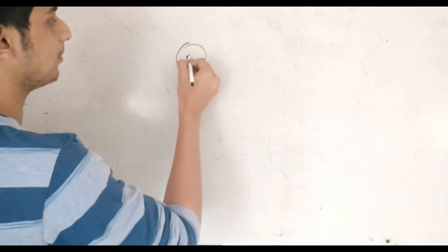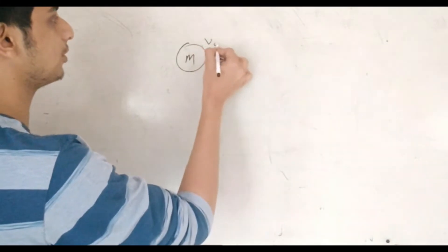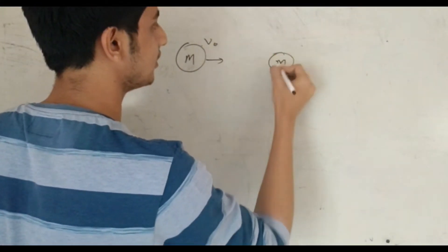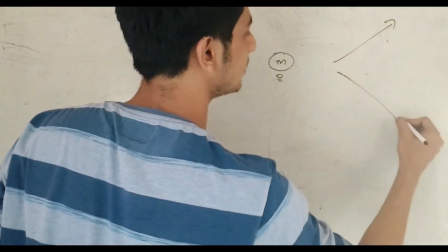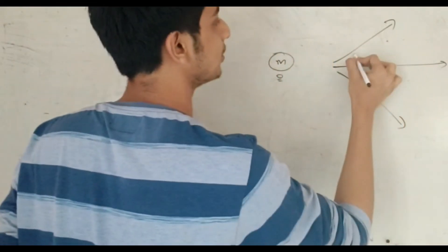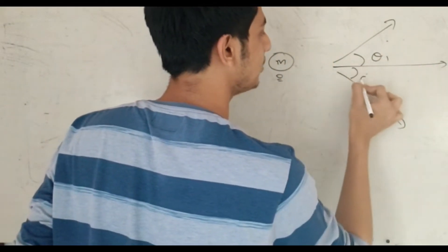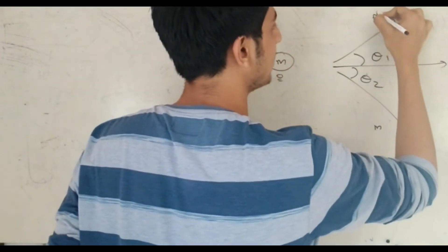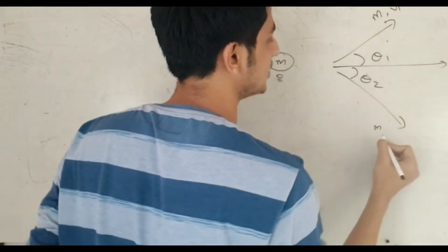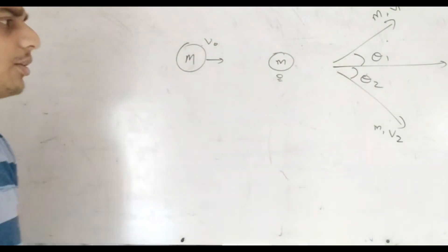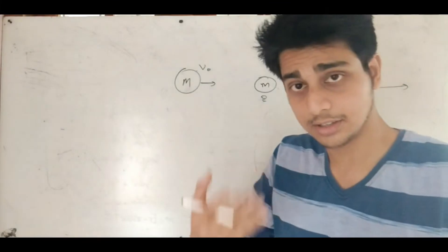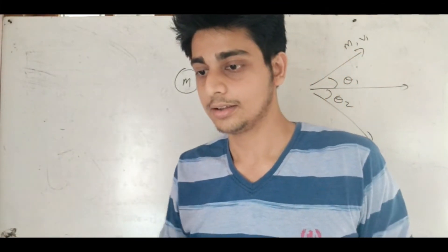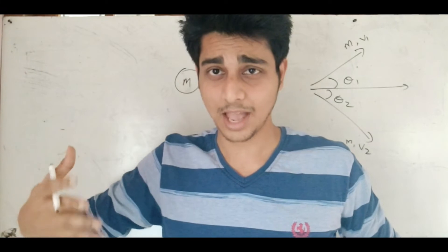This is the case of mass M with a speed V0, and the other mass has speed 0. This is the initial direction. So the condition is that theta1 equals theta2. What is the maximum value of capital M by small m?